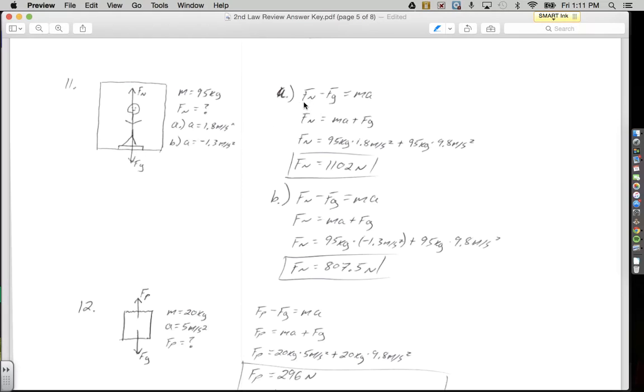So when the acceleration is 1.8 meters per second squared up, we have an equation, which is our normal force, which is upward, minus gravity, which is downward, equals ma. Solving for the normal force, which is what the scale is reading, we're going to move the force of gravity to the other side by adding it. Now we can just plug in our numbers. The mass is 95 kilograms. The acceleration was given at 1.8 meters per second squared. It's positive because it was upward acceleration. And force of gravity is 95 kilograms times 9.8 meters per second squared. Plug that into my calculator and I get 1,102 newtons.